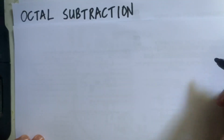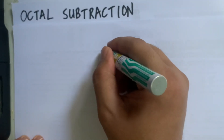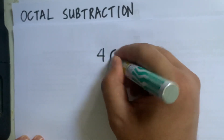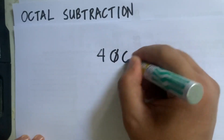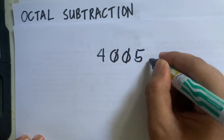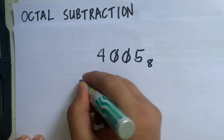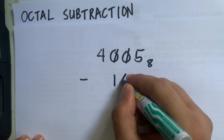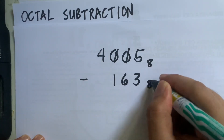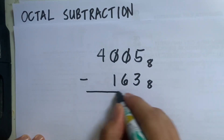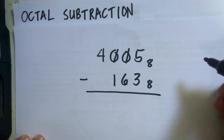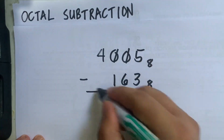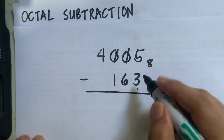For our last example: 4005 in octal minus 163. To subtract, we start with 5 minus 3, which is 2.